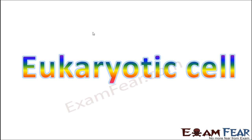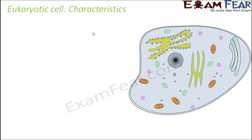As I mentioned before, eukaryotic cells are more complex — they have more organelles. So we will discuss the entire eukaryotic cell first and then later we will take up prokaryotic cell. Let us now look at some of the basic characteristics of eukaryotic cell.